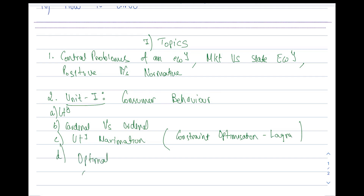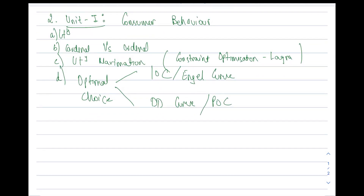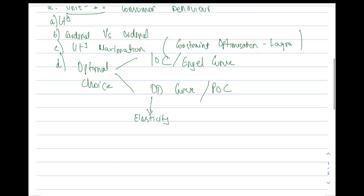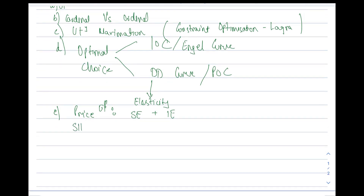After utility maximization, under the topic of optimal choice, there are two categories: first is the income offer curve and Engel curve; the other is the demand curve and price offer curve. With the demand curve, we will also understand related concepts such as shifting of the demand curve, movement along a demand curve, and elasticity of demand and how we calculate it. Then we will go to the topic of price effect and see how we break price effect into substitution effect and income effect. We will also cover Slutsky's equation.